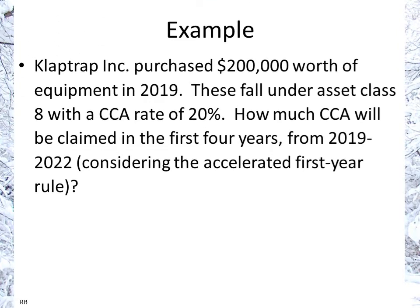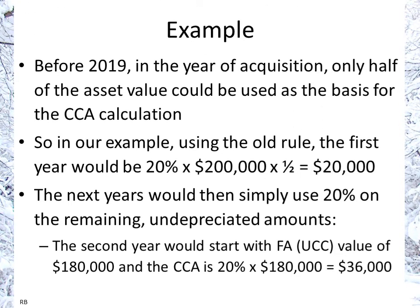Let's try it with some numbers. Claptrack Inc. purchased $200,000 worth of equipment in 2019. These fall under asset class 8 with a CCA rate of 20%. How much CCA will be claimed in the first four years from 2019 to 2022? This considers the accelerated first-year rule since it's post-2019. Before 2019, in the year of acquisition, only half of the asset value could be used as a basis for the CCA calculation — that was the old half-year rule.